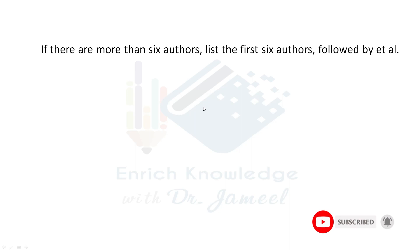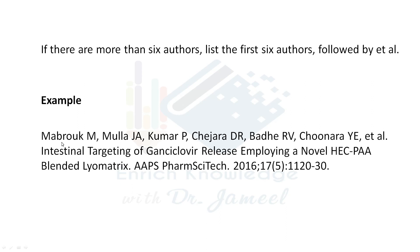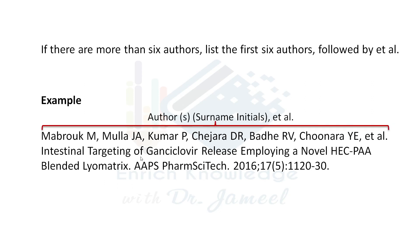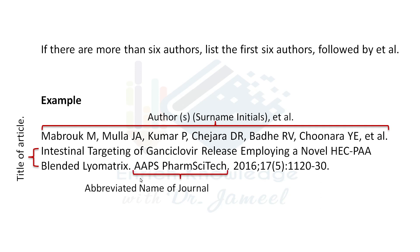If there are more than six authors, list the first six authors followed by 'et al.' For example, you write author names 1, 2, 3, 4, 5, 6, and if there are still more authors, you put 'et al.' followed by a full stop. Then the title of the article, the abbreviated journal name, year, volume(issue): page number — the same format as before.